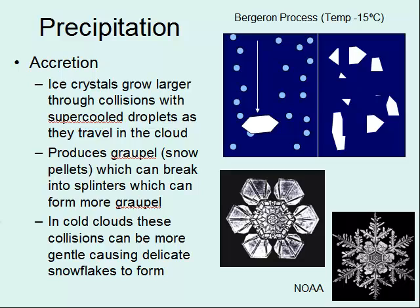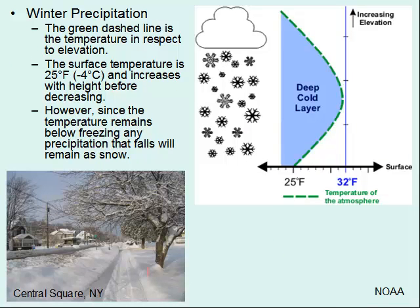As the ice crystal grows large enough, supercooled droplets add to it and produce graupel — snow pellets. These can break apart into splinters and then form more graupel in an ongoing process. In cold clouds, more gentle collisions or slow accretion allow these beautiful dendritic snowflakes to build. In winter up on the mountain or in places like New York State, you get many of these beautiful dendritic snowflakes.